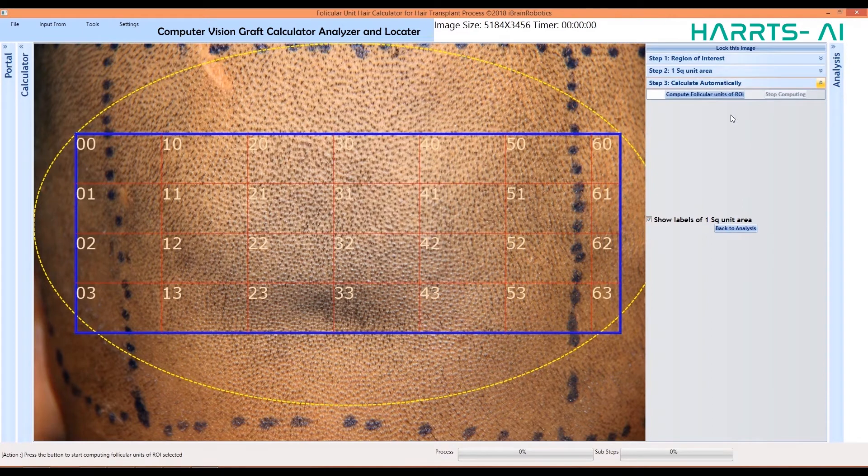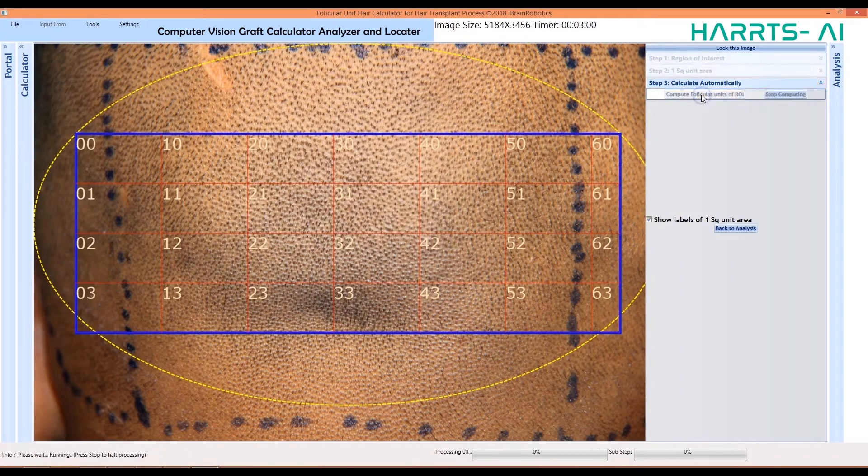The system can define the value of each square unit area automatically, through its artificial intelligence software. Once you have defined each square unit area, click on Compute Follicular Units of ROI to start the details of grafts in the area of interest.